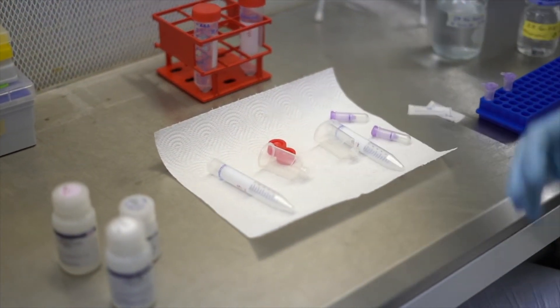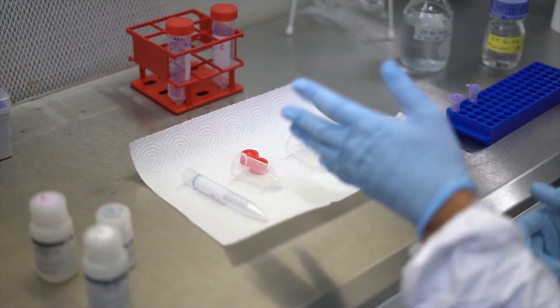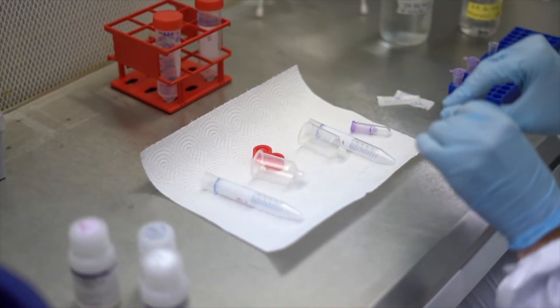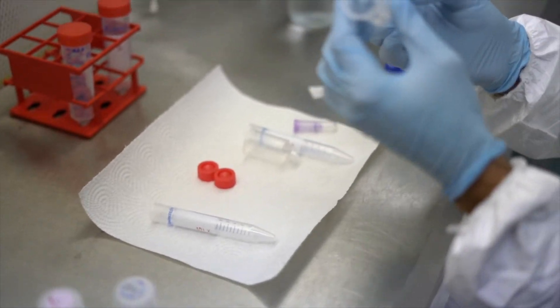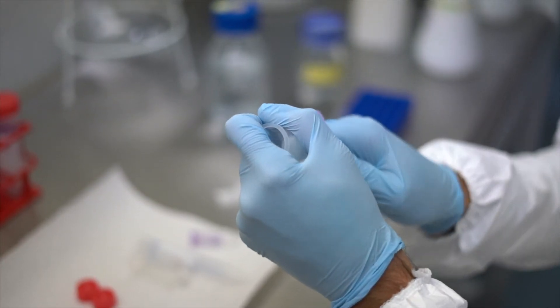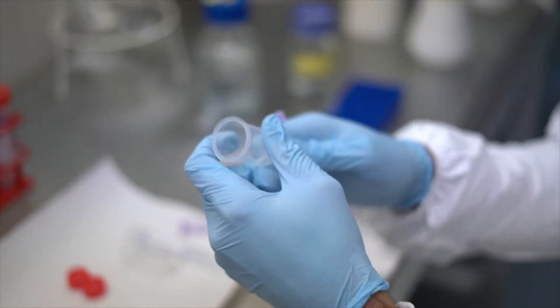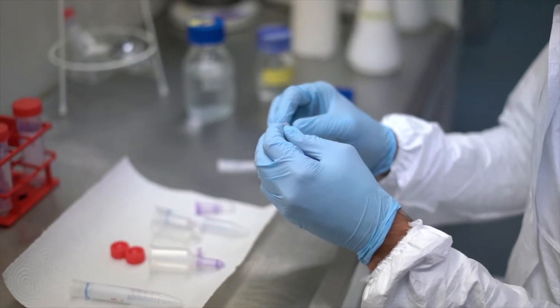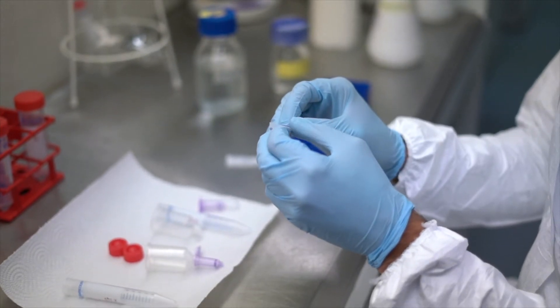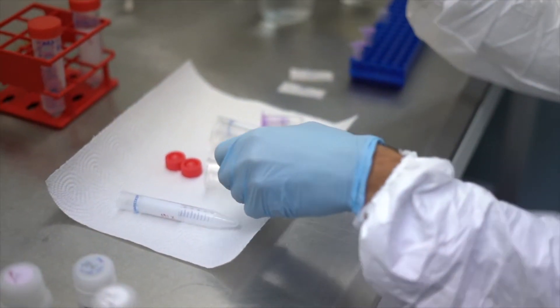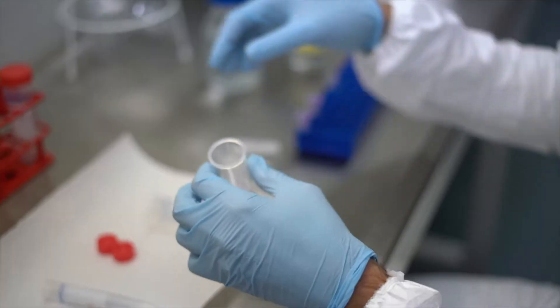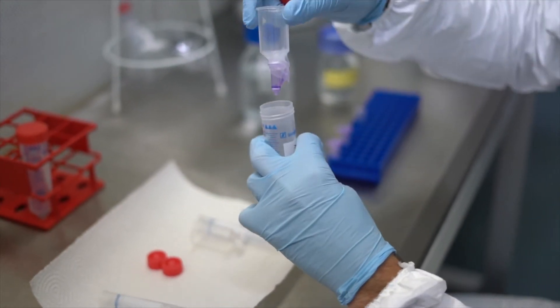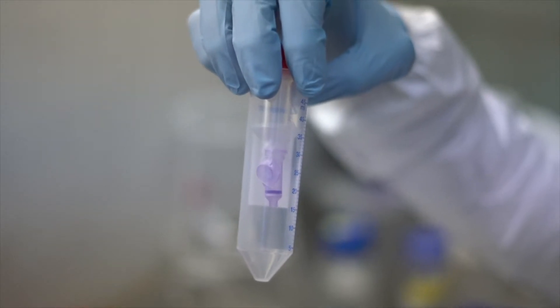For that we need some MinElute Qiagen silica columns and Zymo extension reservoirs. Basically we have to force a MinElute silica column at the end of the Zymo extension reservoirs. We are going to force it very tight so that it won't be lost during the centrifugation. At the end we can also put some paraffin. The paraffin does not really help fixing the structure but it will at least avoid that the lid of the MinElute column will fly around. Finally this structure has to be placed on a 50 milliliter falcon tube. Good, let's start with the extraction.